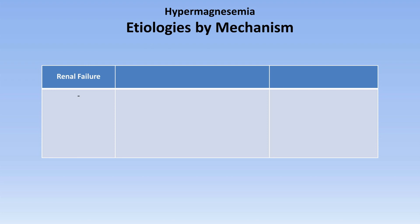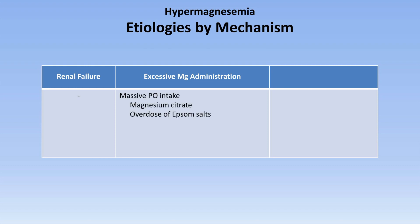The next mechanism of hypermagnesemia is simply excessive magnesium administration. This can be in the form of massive PO intake from the laxative magnesium citrate or from Epsom salts. It can be from excessive IV infusion, which can be seen during the treatment of the life-threatening obstetric condition of eclampsia, in which appropriate treatment almost always results in supernormal magnesium levels. And finally, it can be from magnesium-containing enemas, particularly when used in a patient with concurrent renal impairment, and in fact magnesium-containing enemas are contraindicated in that situation.